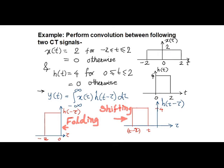Impulse response h is 4 for the interval 0 to t, which is another rectangular function. We start with writing the formula of convolution integral: y of t equals minus infinity to plus infinity, x of tau, h of t minus tau, d tau.